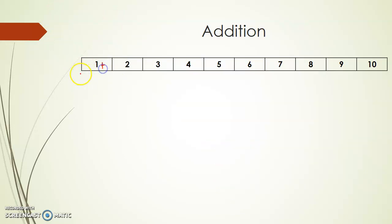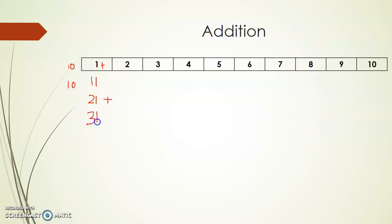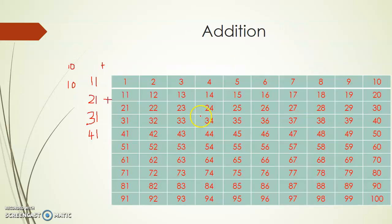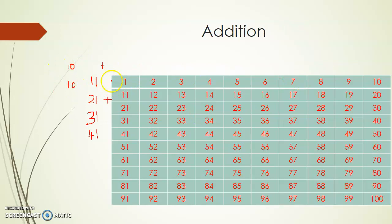Now, if we add 10 to 1, we get 11. 11 plus 10, we get 21. 21 plus 10, we get 31. 31 plus 10 is 41. So in the 1 to 100 number chart, we can see there are rows.